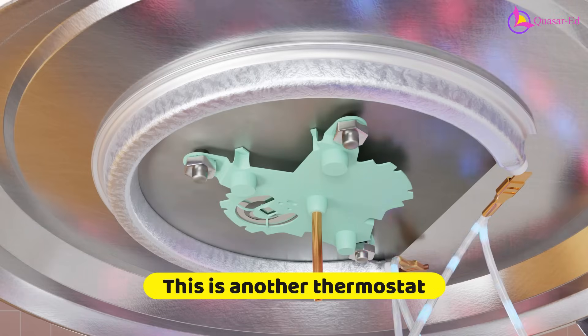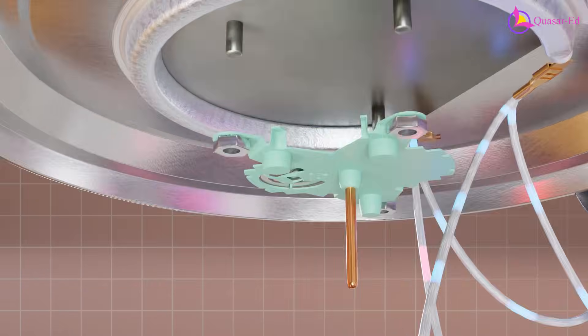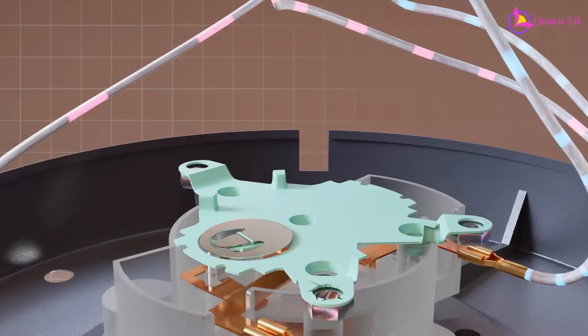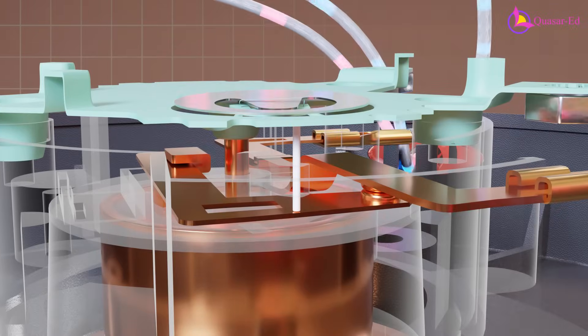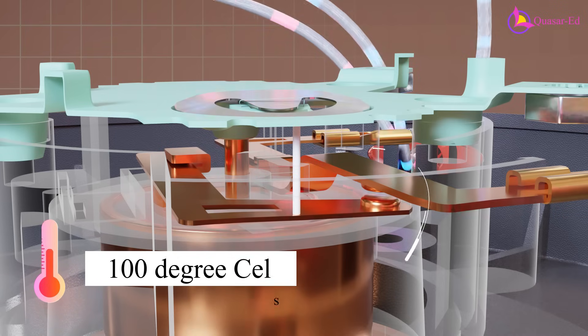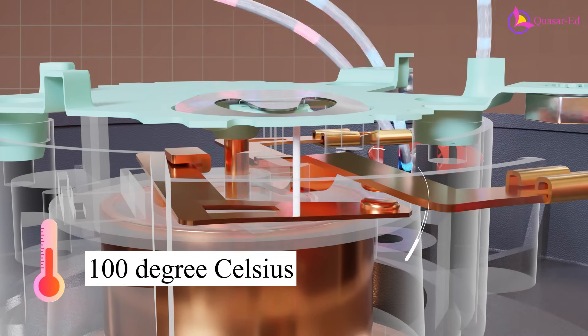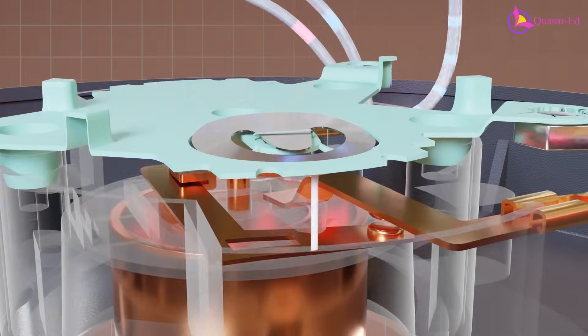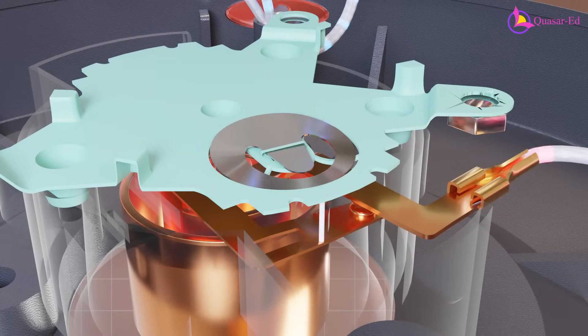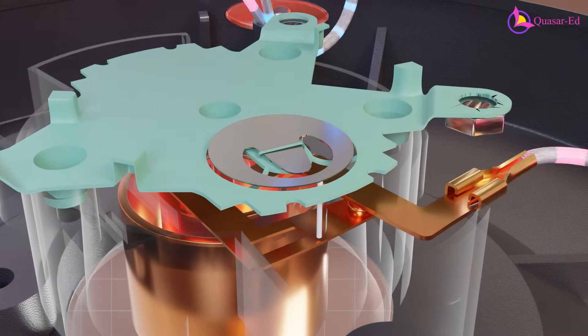For additional safety, another thermostat is placed at the center of the heating element. If the upper switch fails or gets stuck, this thermostat cuts off the power when the temperature reaches 100 degrees Celsius, preventing overheating. It uses the same bimetallic disc mechanism to disconnect the power until the temperature drops below 100 degrees Celsius.